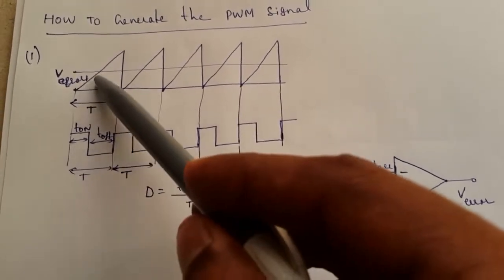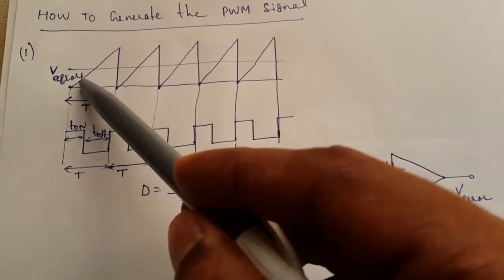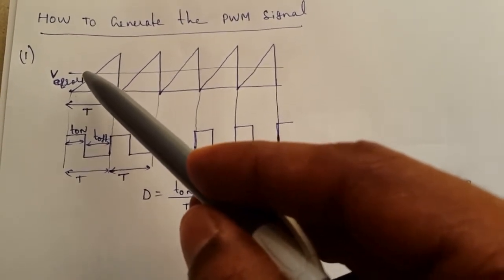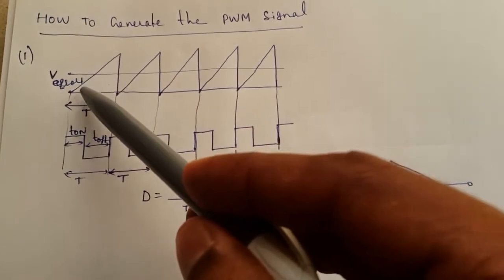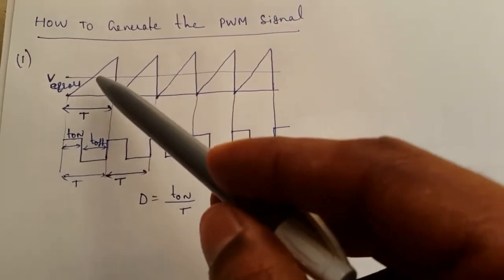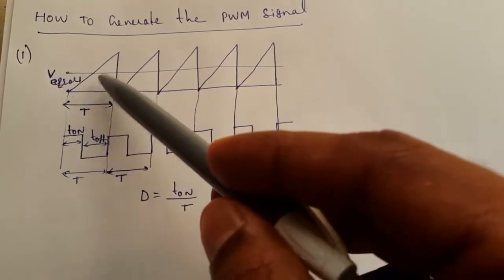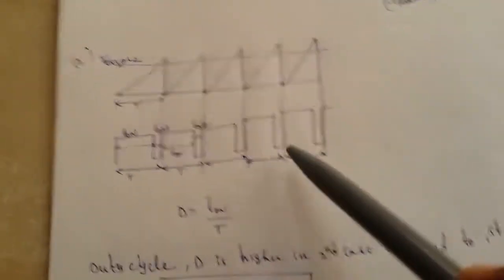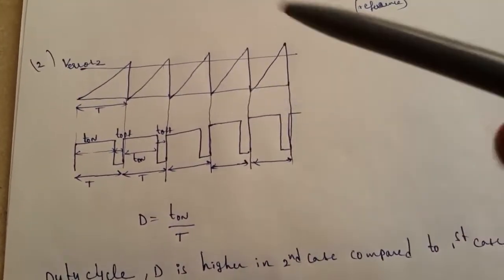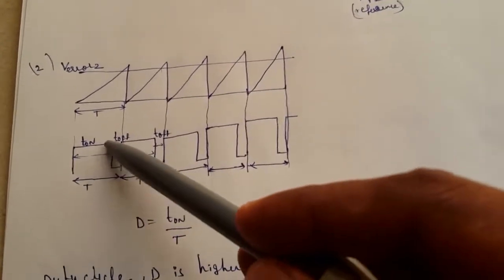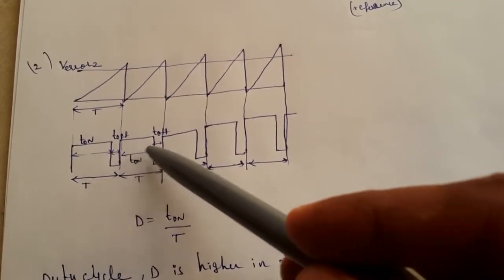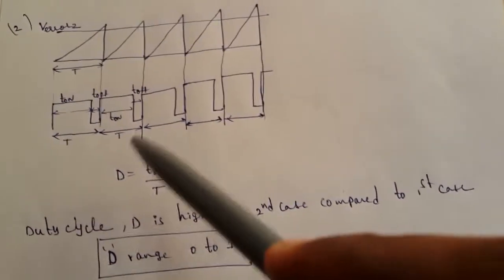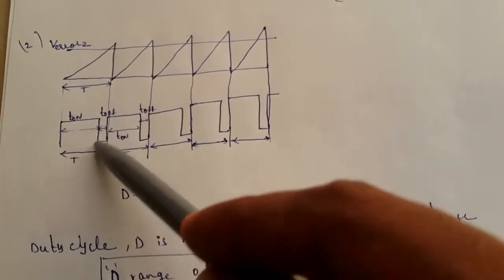During the T_on period, whenever the error voltage is greater than the sawtooth signal, the output will be high. Whenever the sawtooth signal is higher than the error signal, the output goes low — this is the off period. Similarly, when the error is increasing, meaning more output voltage is required, the on-duration will be increased. The duty cycle is T_on divided by T, and by controlling this on-duration we can control the output voltage.